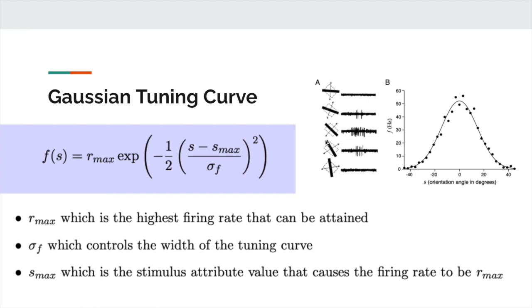The black bar represents a bar of light moved across the screen at different orientations. The horizontal lines on the right represent action potentials — there was a high neural response at certain orientations, but it dies down as the bar of light shifts to other orientations. This particular orientation appears to be the optimal angle, producing the highest neural response.